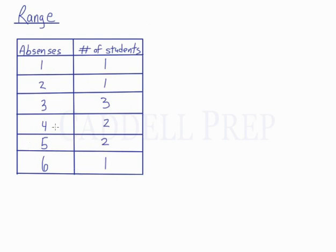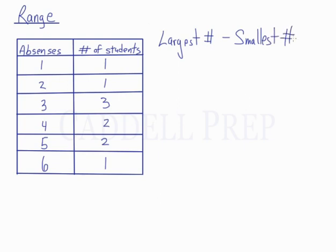So if we want to find the range of absences, we're just going to do the largest number minus the smallest number. So we're going to do six — which is the greatest number of absences — minus one, and we find that the range is five.